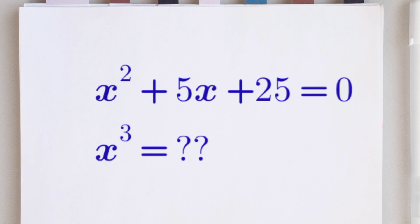Alright guys, in this video we have this quite simple question. It says x raised to the power of 2 plus 5x plus 25 is equals to 0, and we have to solve for x cubed — that is x raised to the power of 3. You can pause this video and give this question a try. I would like to see your answers in the comment section.